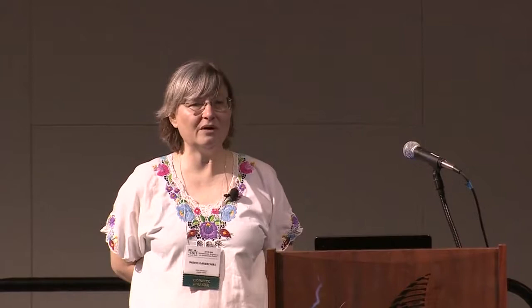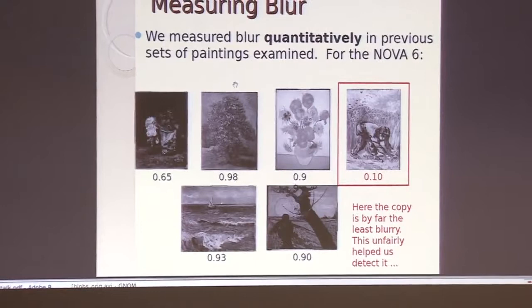We had reproductions from photographs from two different museums using two different photographers. We could see that the Cologne photographer, on average, had a little sharper picture than his colleague in Amsterdam. When we did this on the NOVA six paintings on a scale from zero (no blur) to one (blurriest), we saw that what we had picked up was that the NOVA picture was sharper. So here I am, eternalized on the internet giving high fives for something that was, by scholarly standards, really a fake result. It's painful.